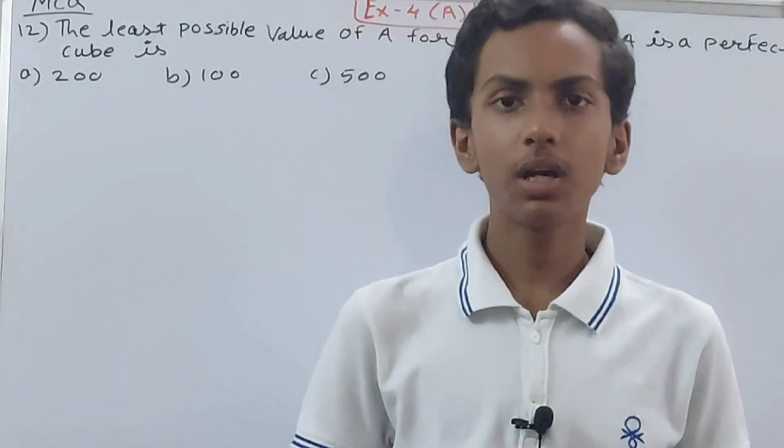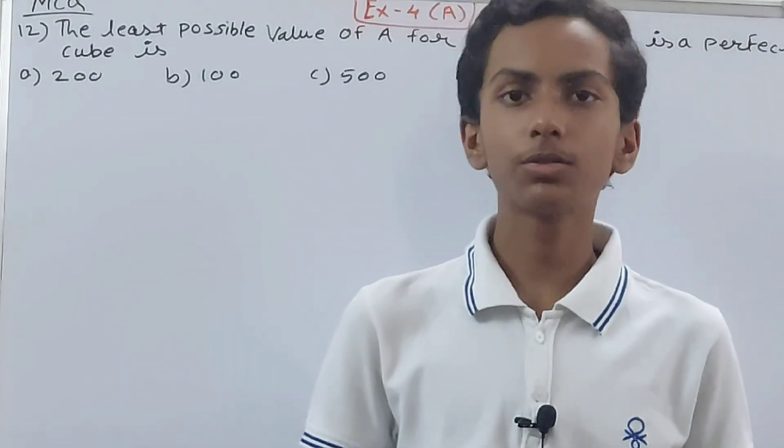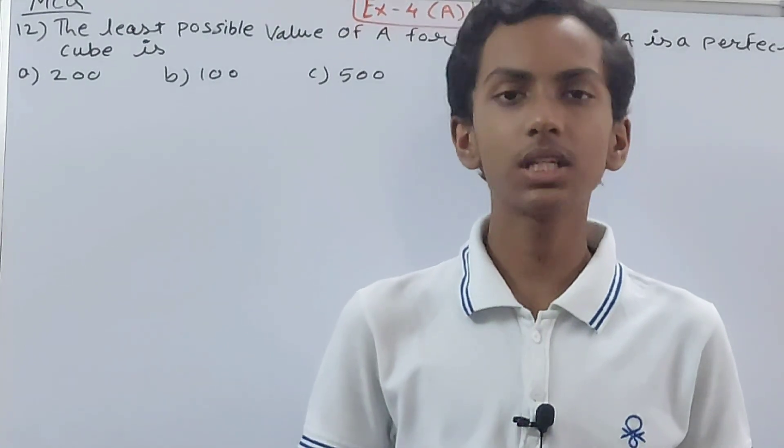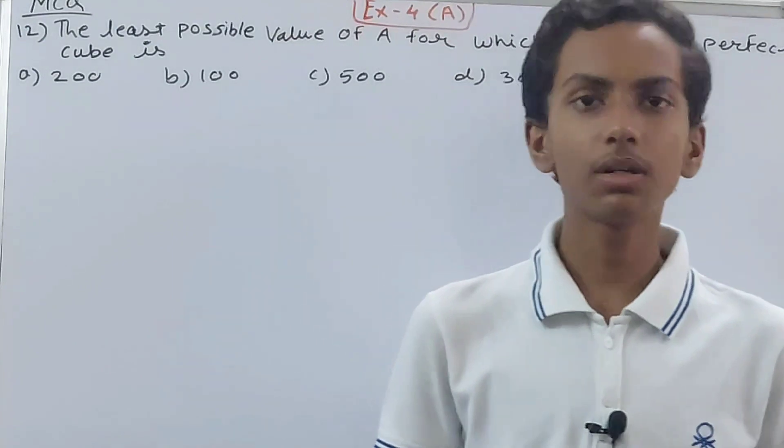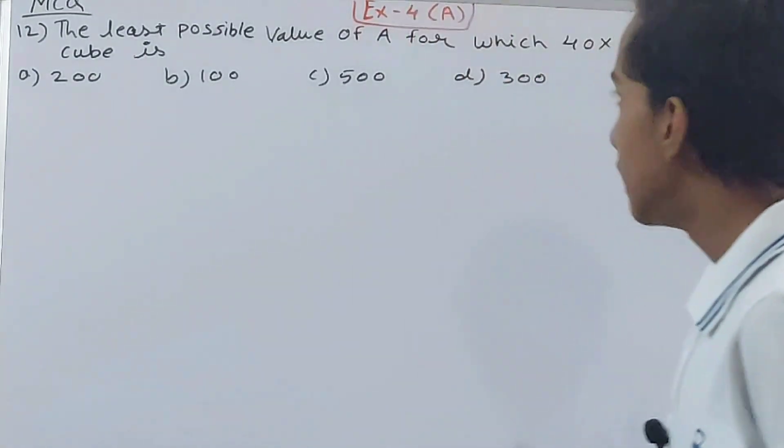Hello friends, welcome back to my YouTube channel and local learning. In this video we are going to solve IGCSE mathematics class 8 chapter 4 cube and cube roots exercise 4A question number 12. This is the least possible value of A for which 40 into A is a perfect cube.